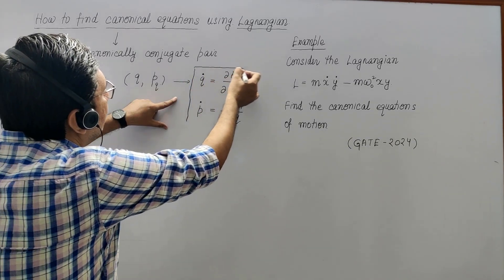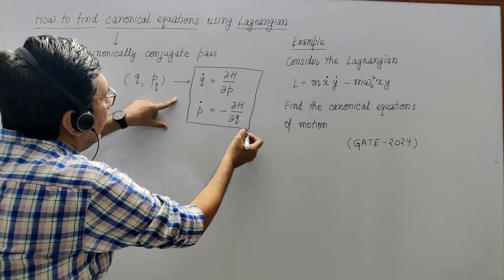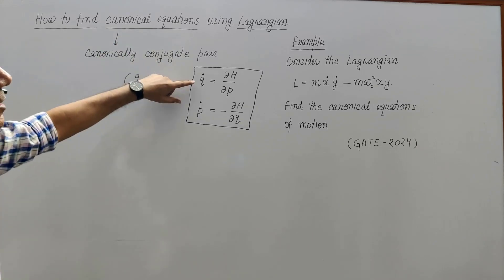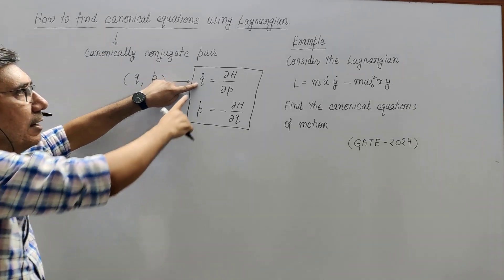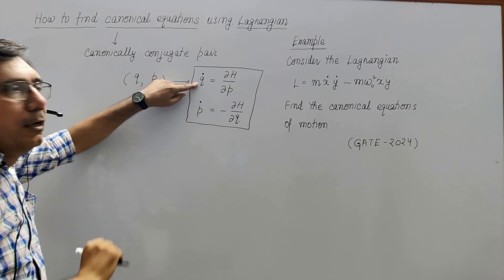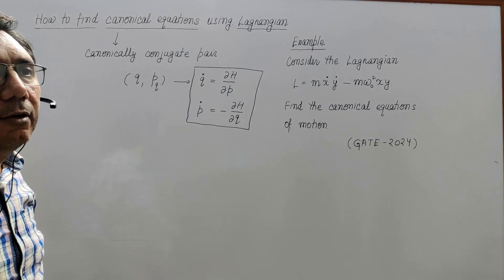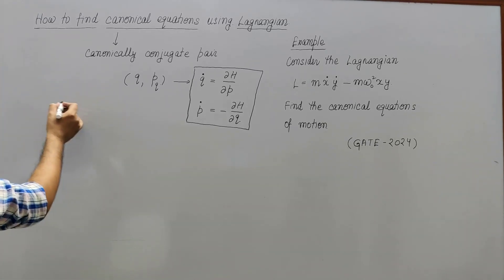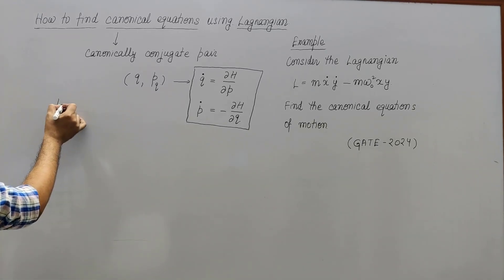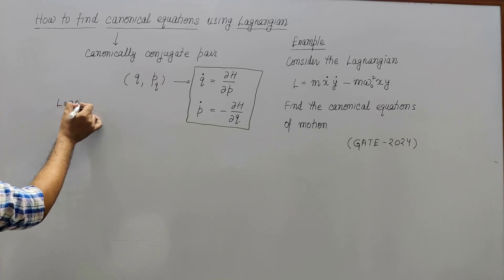These equations are called canonical equations — they provide us q̇ and ṗ, telling us how q and p are changing with time. If the Hamiltonian is given you can easily find them, but the question is: what do we do if the Lagrangian is given?